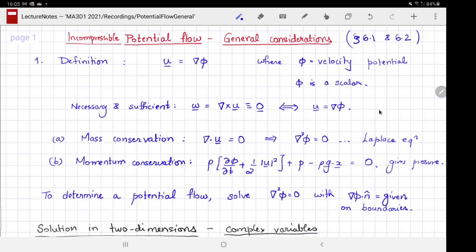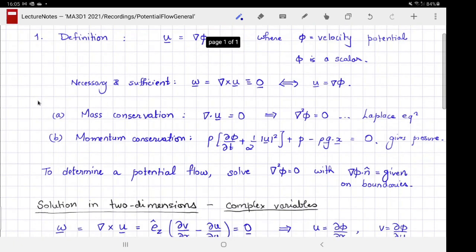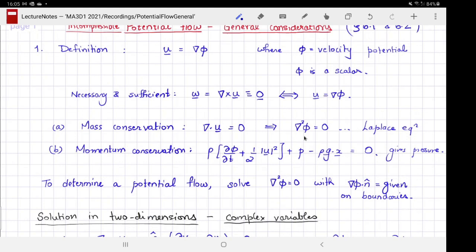This simply follows from vector calculus. You have seen this in the preliminaries and the first example sheet where you found that the two were equivalent. If velocity is the gradient of a potential, then it becomes really easy to satisfy mass and momentum conservation. Mass conservation simply reads divergence of velocity equals zero because we have assumed incompressibility, and that gives you just the Laplace equation for the velocity potential.